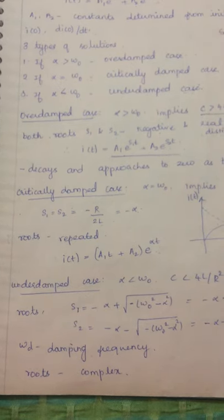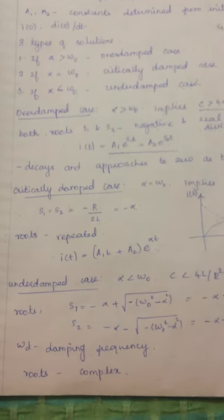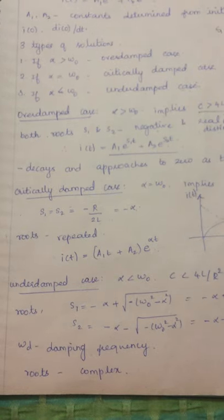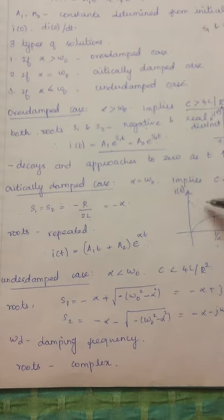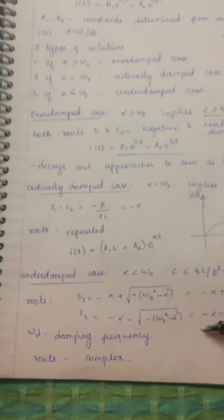We are discussing series source-free RLC circuits. This is part 6. We have already seen the over-damped case and the critically damped case. Next, we will see the under-damped case.